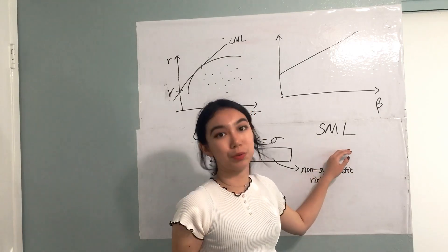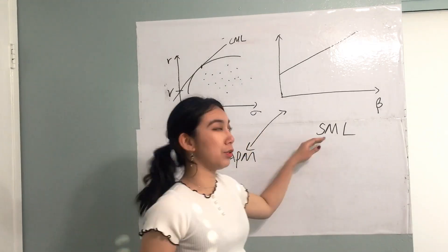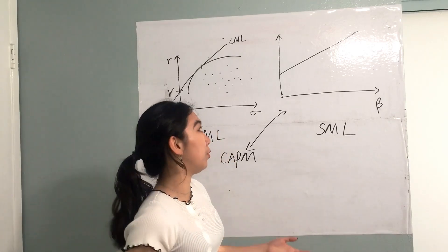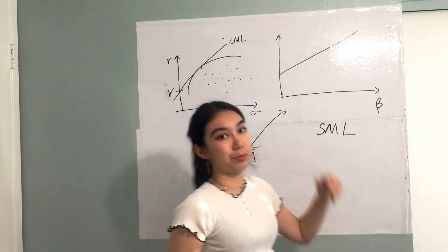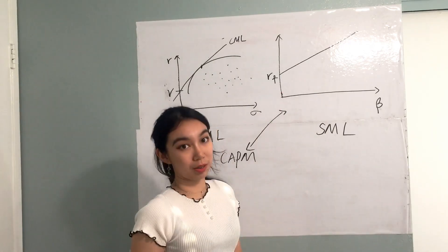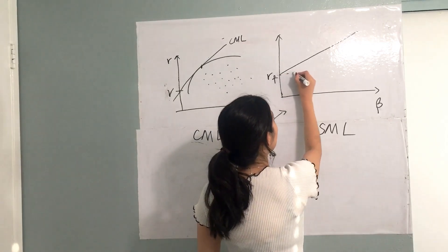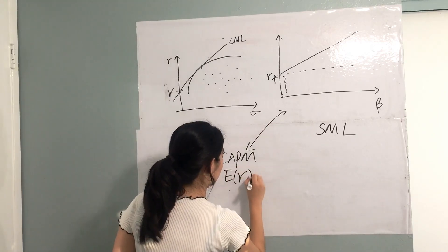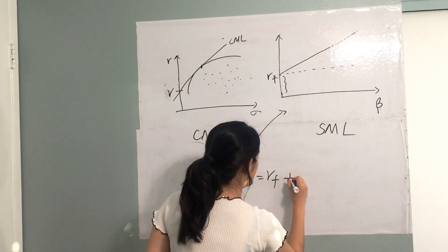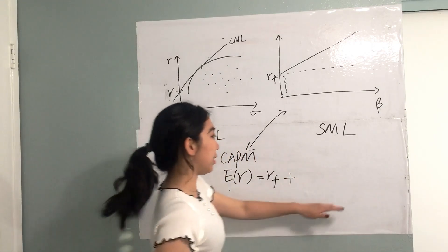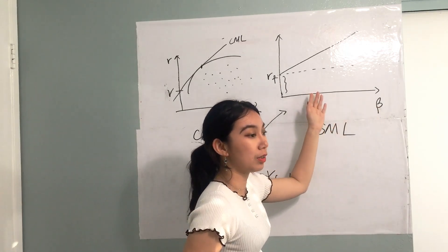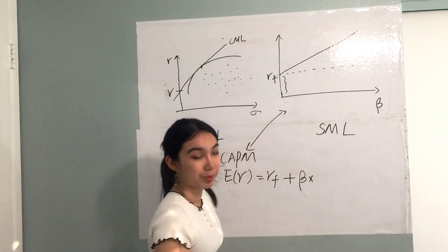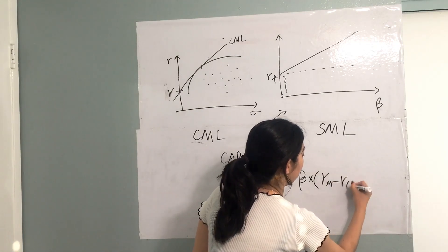The security market line is also a graphical representation of the capital asset pricing model, which is the relationship of the required rate of return to the market return. So intuitively, we can look at the plot. First of all, we have the risk-free rate. And the second part is related to the sensitivity of the stock relative to the market return. So it is the beta times the market risk premium, which is the excess return from the risk-free rate.